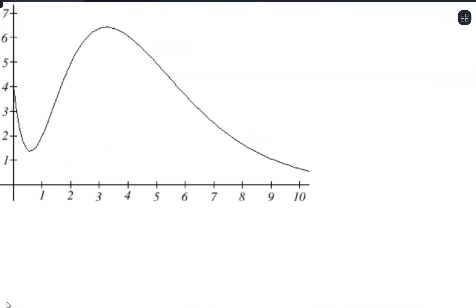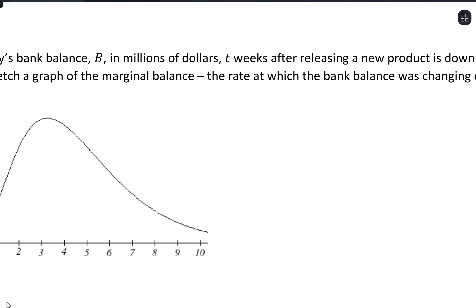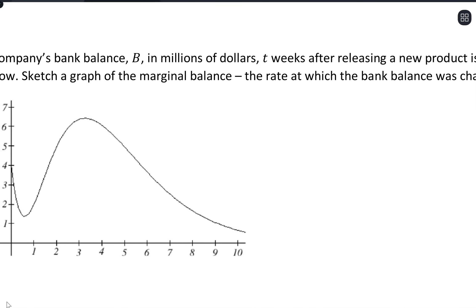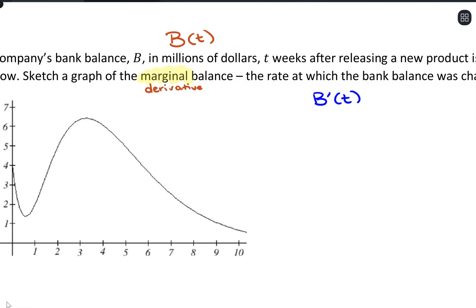So let's try this out. We have a company's bank balance B in millions of dollars, T weeks after releasing a new product, as shown in the graph below. Sketch a graph of the marginal balance. Remember, marginal for us is now this idea of the derivative. So we have this function B of t, and we want to graph B prime of t — that will give us our marginal balance.